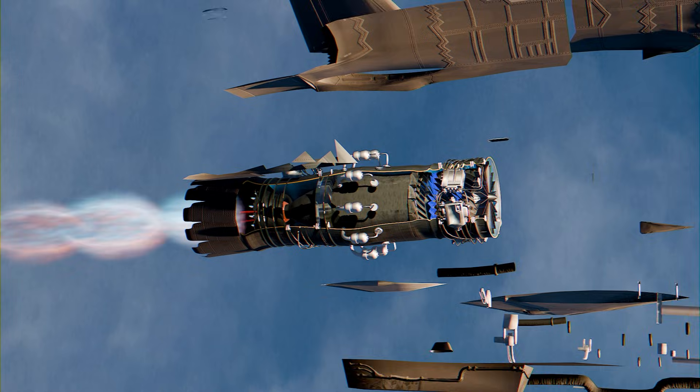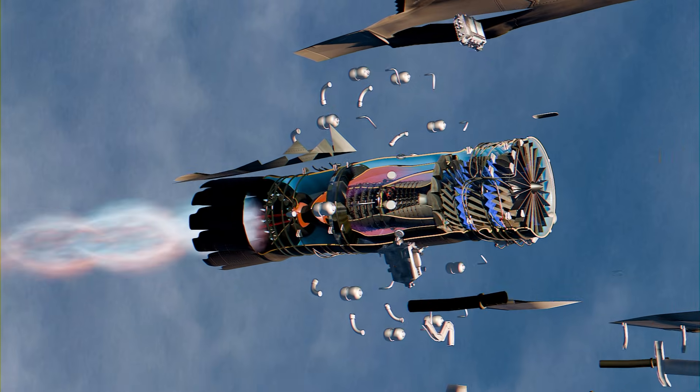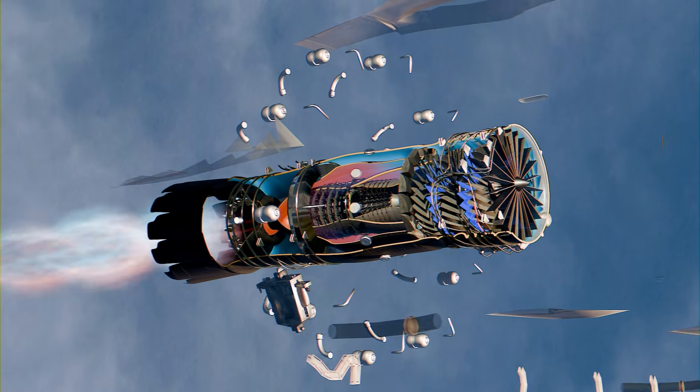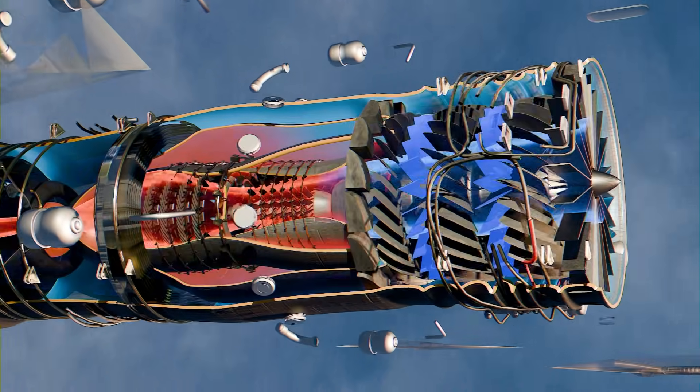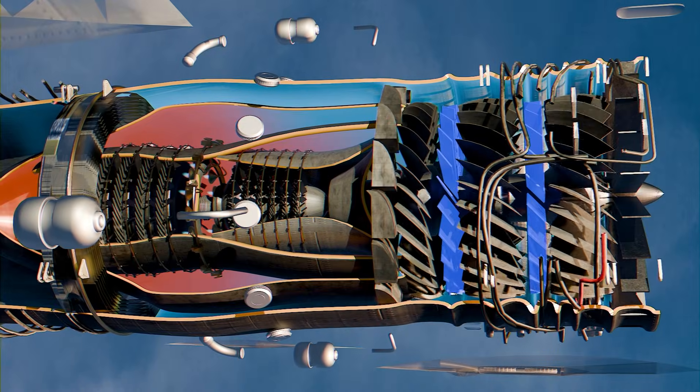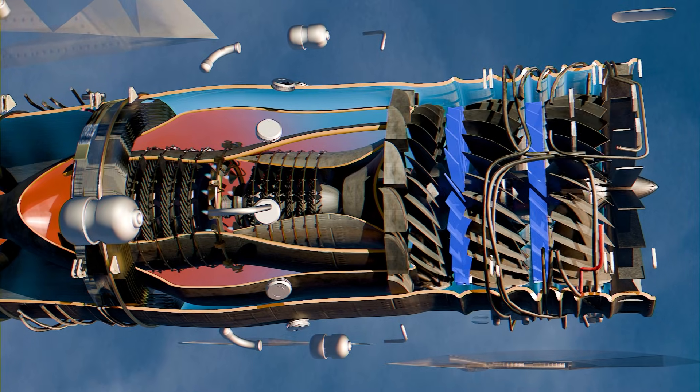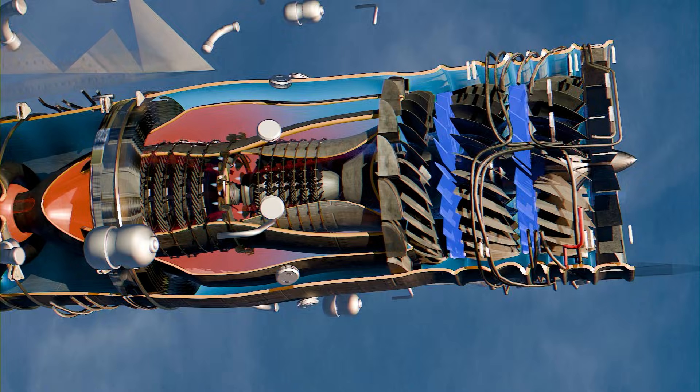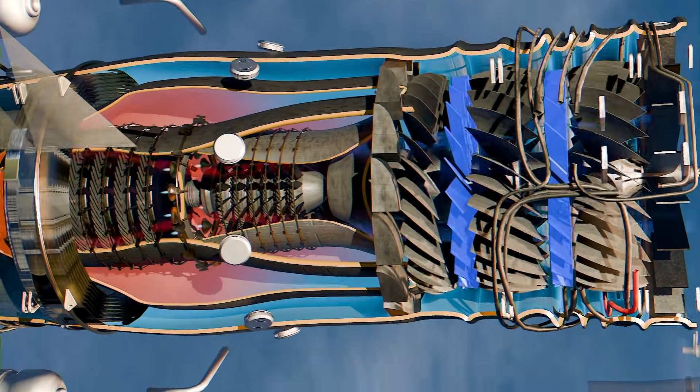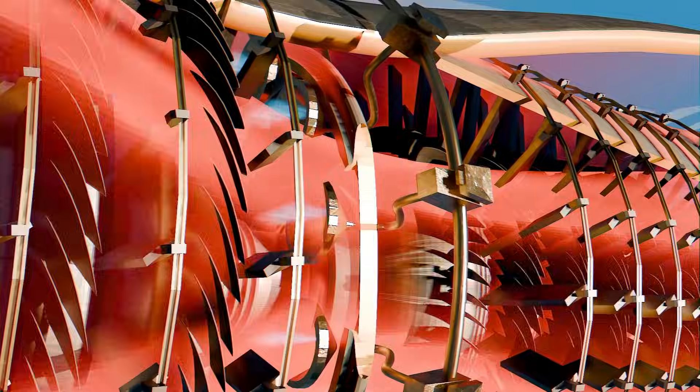The first fan stage accelerates the air and passes it through variable stator vanes (VSVs). These vanes can rotate to straighten or redirect flow, stabilizing pressure ratios and preventing compressor stalls. Already, the air can be split. Part is directed into the engine core for compression and combustion, while the rest moves into bypass ducts.